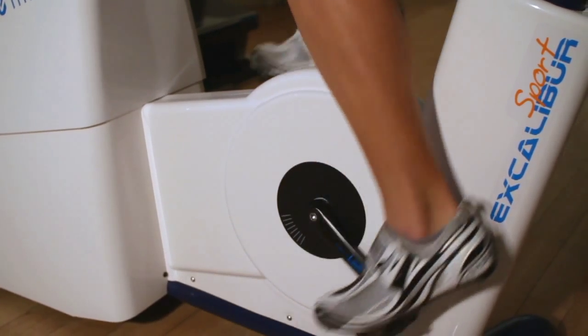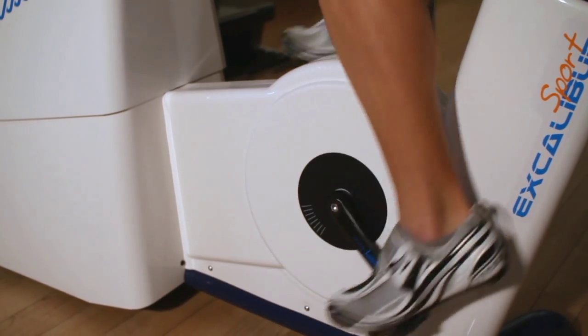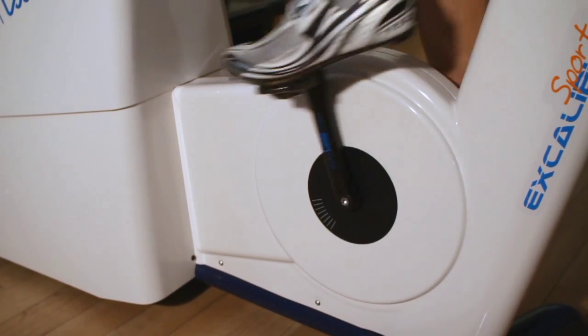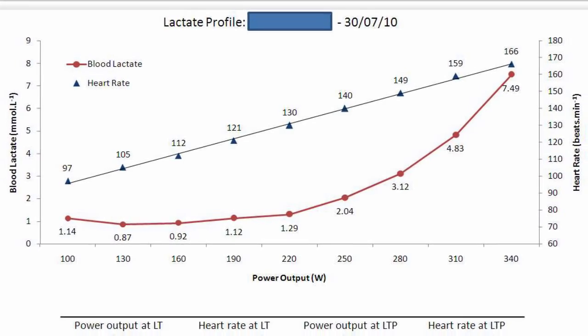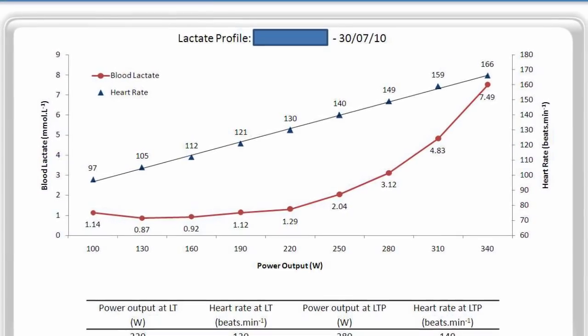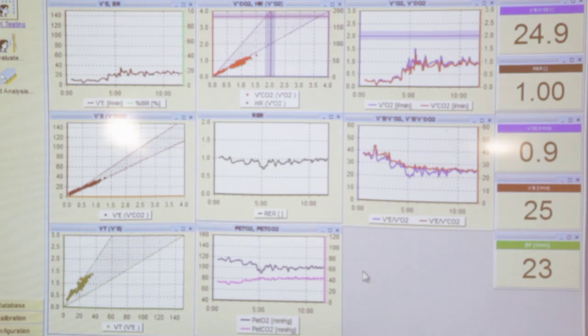The key markers that can be identified in these tests are considered key markers of endurance performance potential and include measurement of the lactate threshold, the lactate turn point, the onset of blood lactate accumulation, and the maximal lactate steady state value, to name a few.